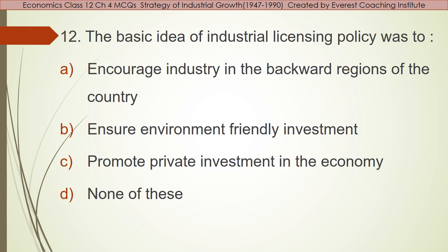Question number twelve: The basic idea of the industrial licensing policy was to — encourage industries in backward regions of the country, ensure environment-friendly investment, promote private investment in the economy, or none of these. Industrial licensing policy was basically designed so that backward regions would also be developed by encouraging industries there. This would reduce overall poverty and raise the standard of living. So the answer is option A — encourage industries in the backward regions of the country.